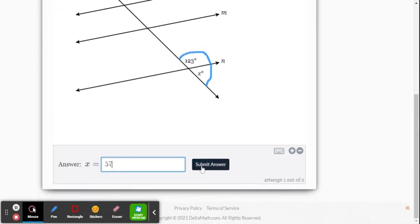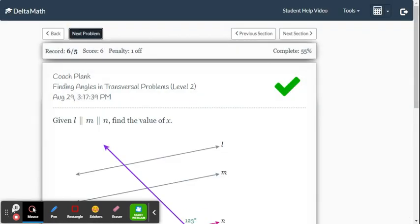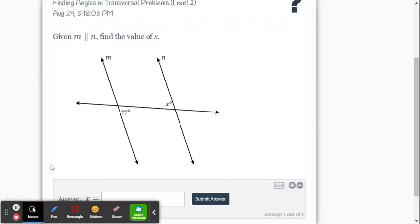57. All right, one more, and this is like level one. They gave you alternate interior angles right away, so it's just going to be x equals 77 degrees. So they're really not a big difference between level one and level two problems in Delta Math for this problem set.